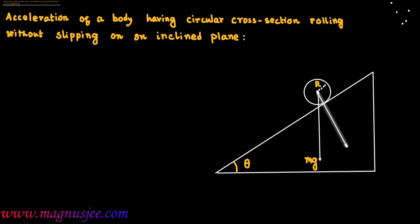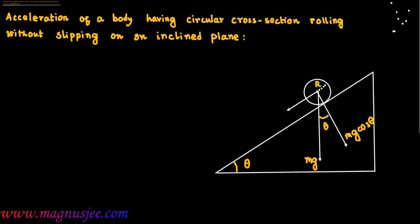The weight mg is resolved into two rectangular components. The component perpendicular to the inclined plane is mg cos theta, and the other component which acts down the inclined plane is mg sin theta. The radius of the body is small r, and the body has circular cross-section.